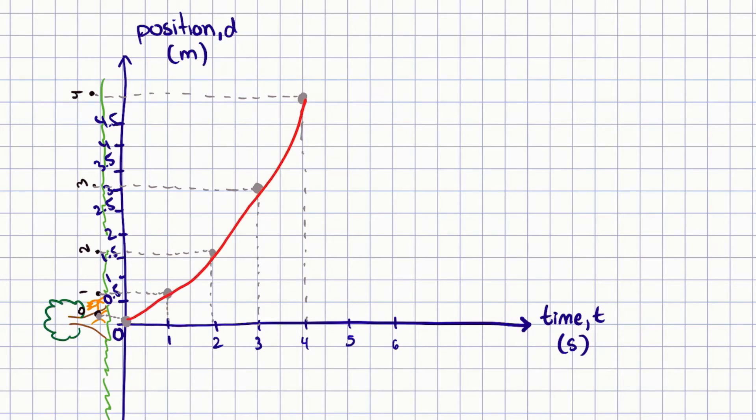What this is showing us is the type of motion that we described in the motion diagram, which is an object that happens to be speeding up. So let's make a note of this.